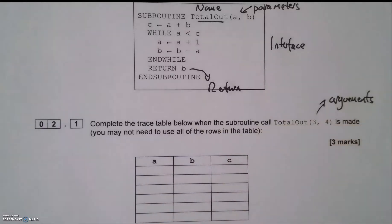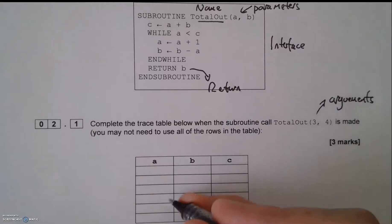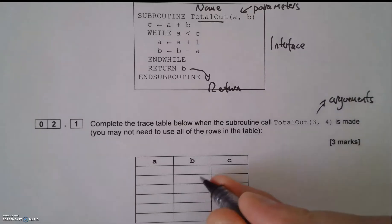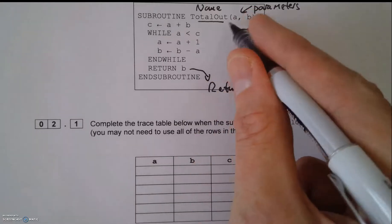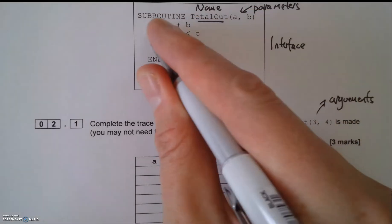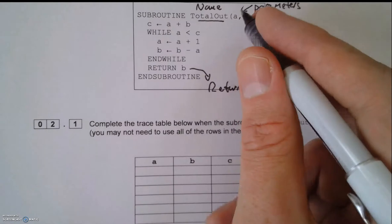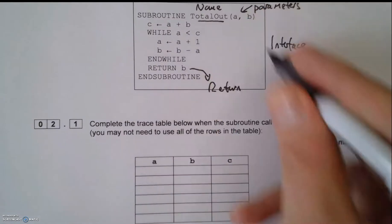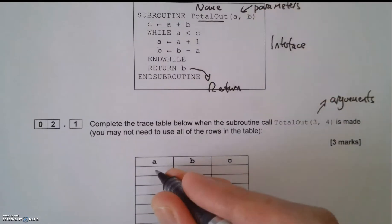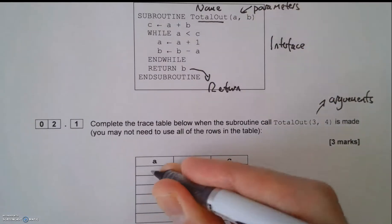What I'm asked to do is complete the trace table when the subroutine call 'totalout(3, 4)' is made. It says you may not need to use all the rows of the table, and we're not going to use all the rows.